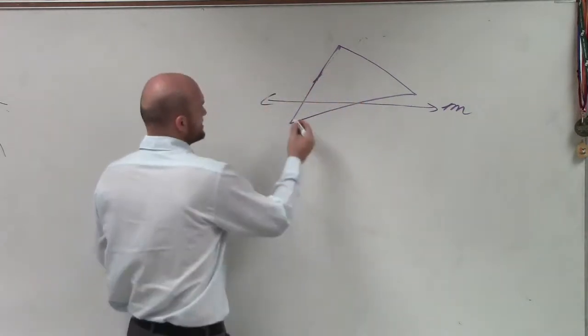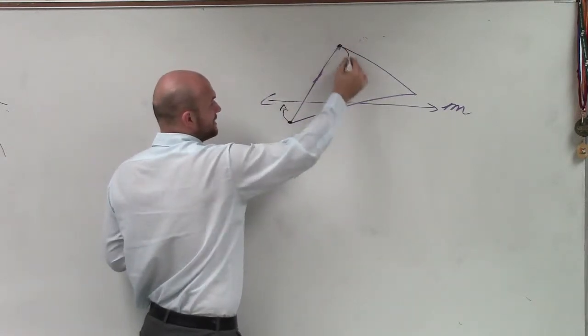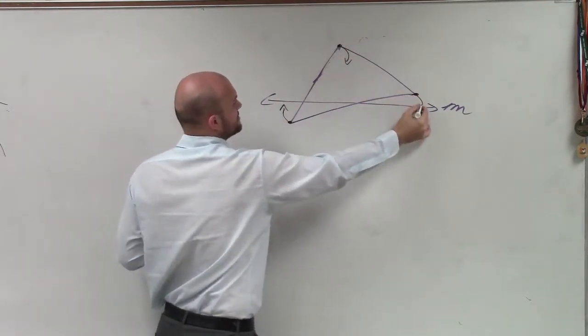So what's difficult about this is when we reflect this, this point needs to be reflected that way, this point needs to be reflected there, and this point needs to be reflected there.